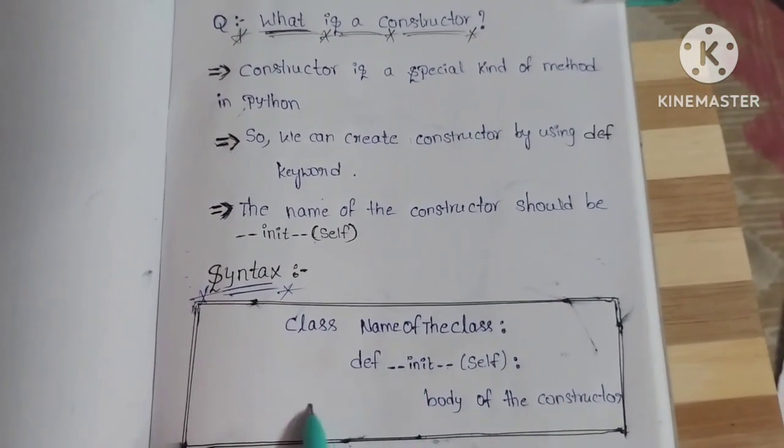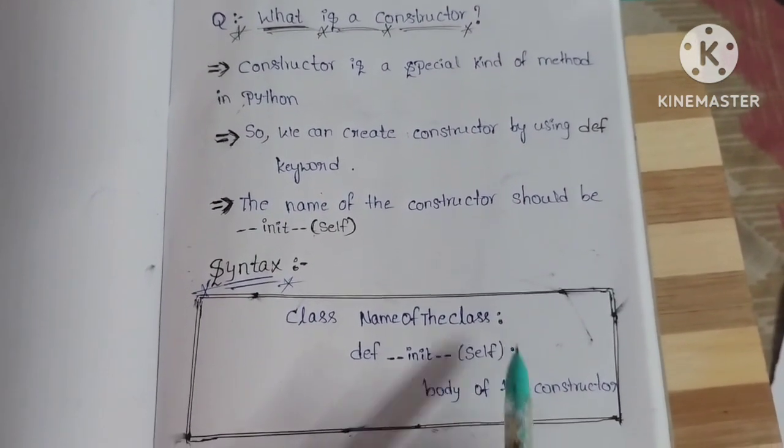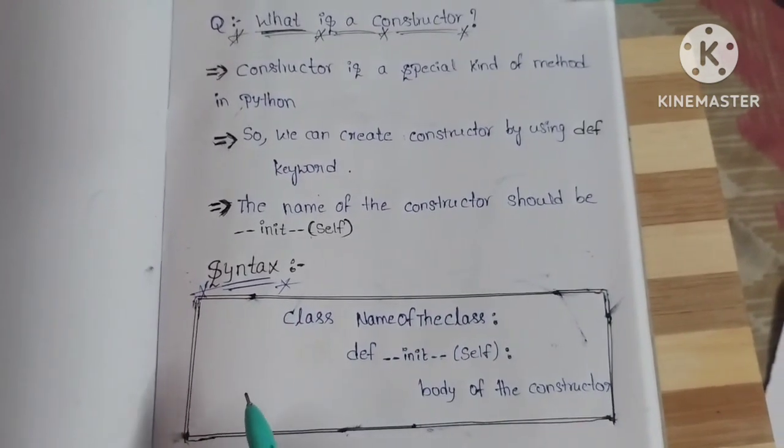After colon symbol, we should provide two indentations. After two indentations, we should write the body of the constructor.